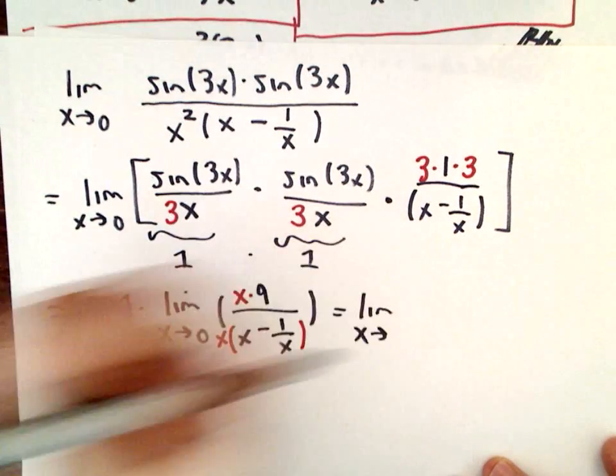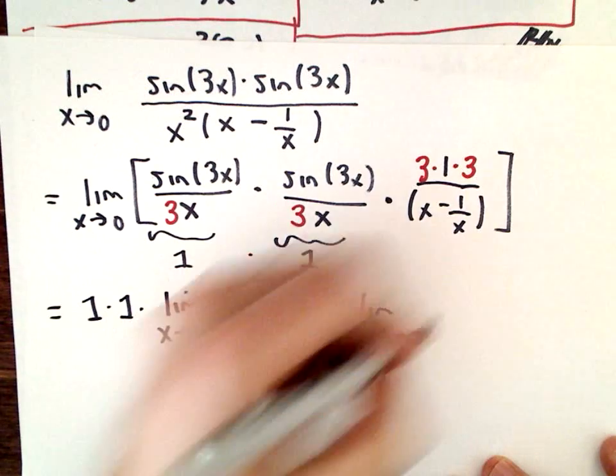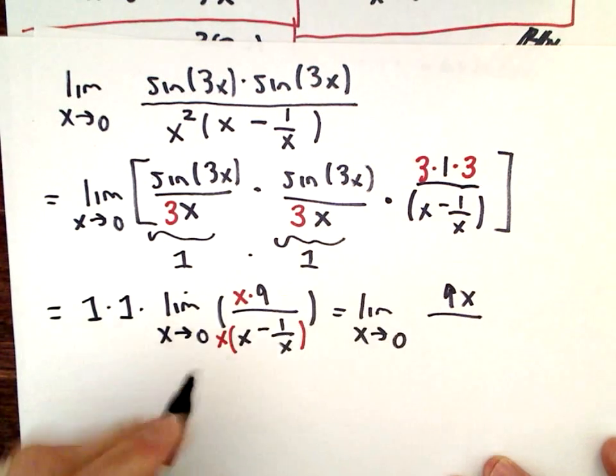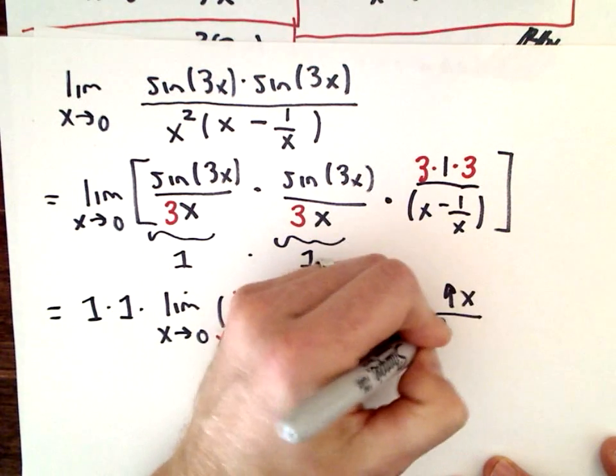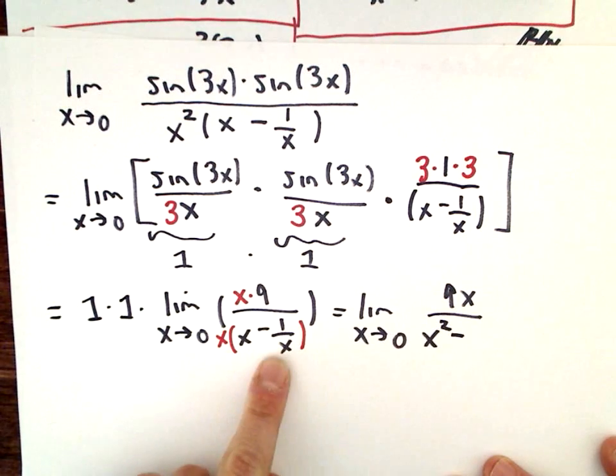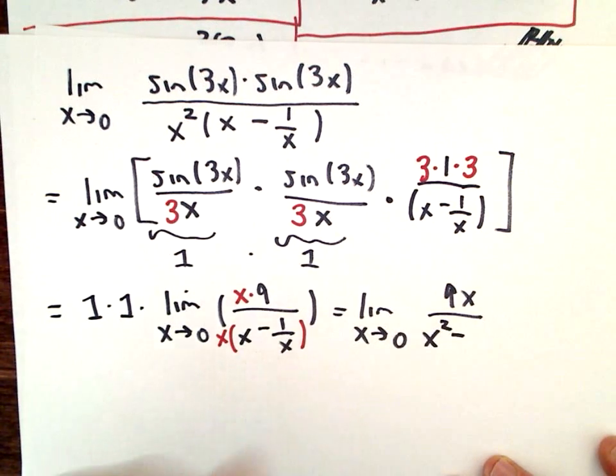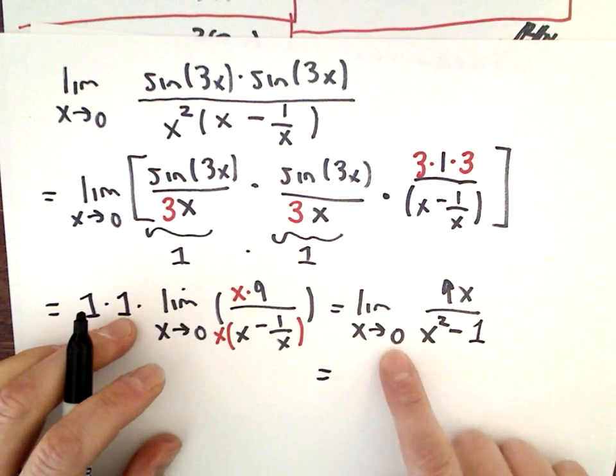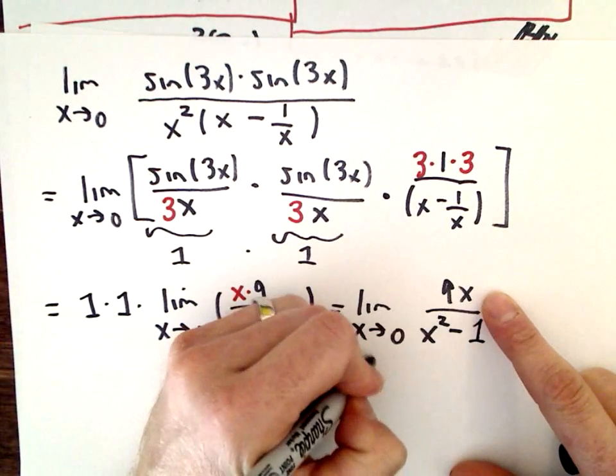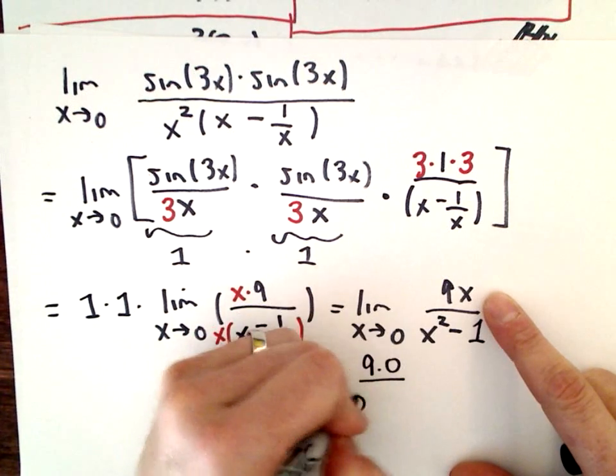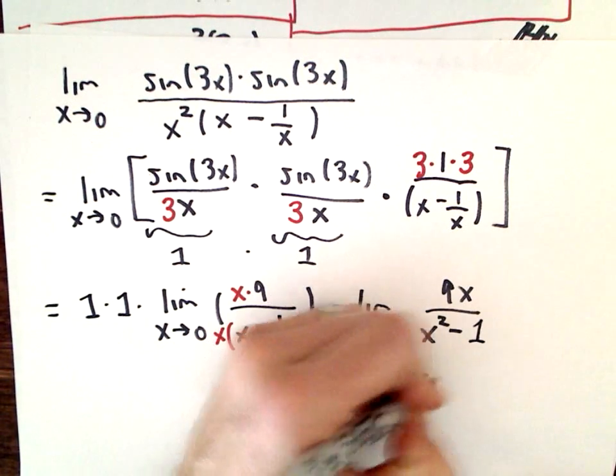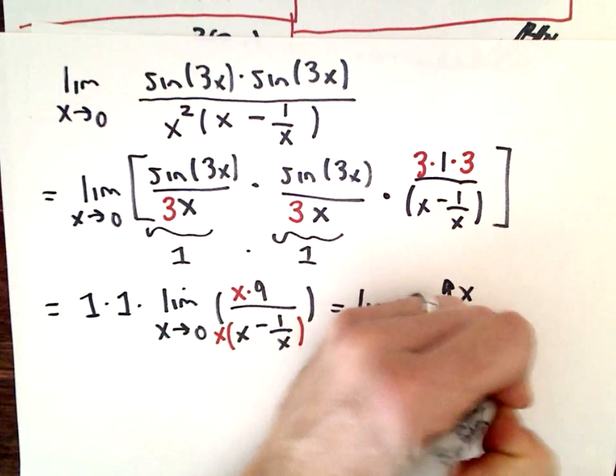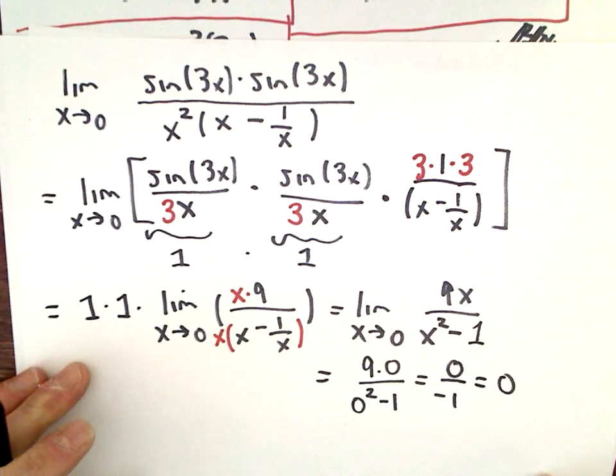So 1 times 1 times this limit, that's just going to equal the limit as x approaches zero. I've got 9x on top. If I distribute, I would have x squared. x multiplied by 1 over x, that's going to be x over x, or minus 1. Hey! What a great thing, because now I can plug in zero. I'll get 9 times zero over zero squared minus 1. That's going to be zero over negative 1, which is zero. Which is going to be your answer.